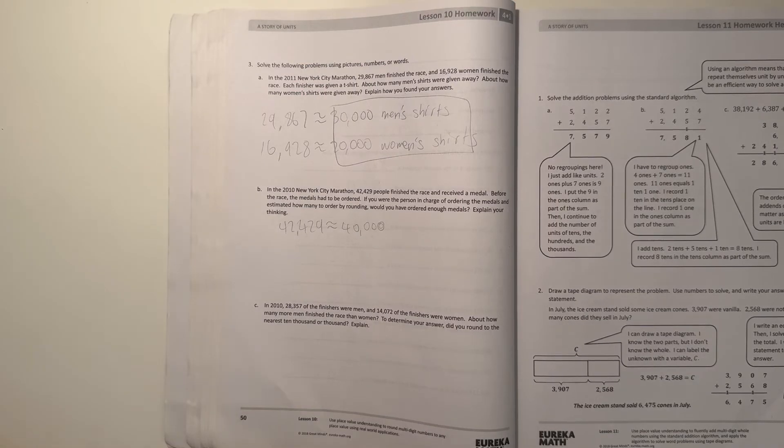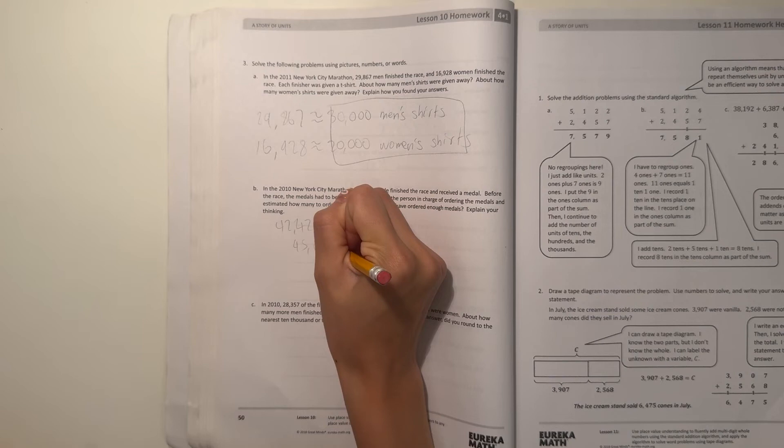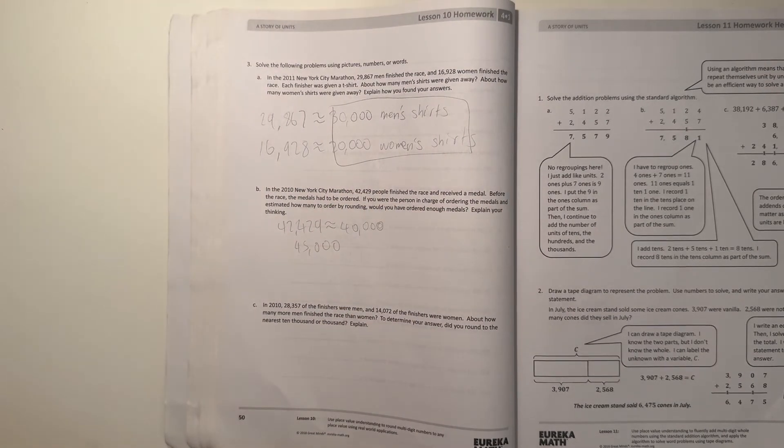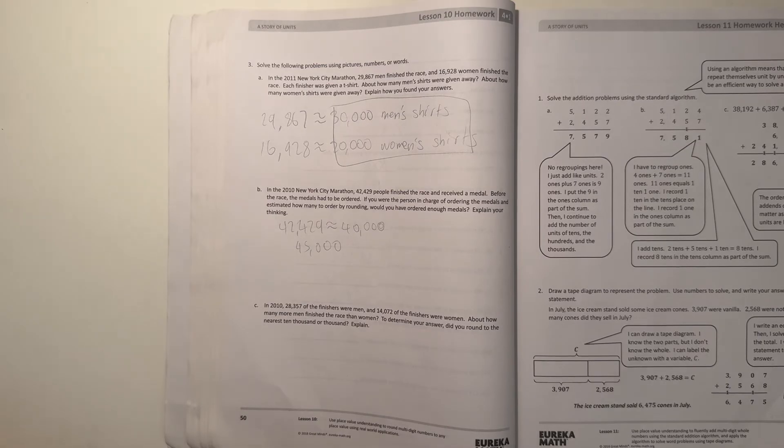So for me I would round up instead of rounding down. So I would round to like 45,000, maybe possibly 50,000, but I think I would round up if I was in charge because I would want to have enough. So 42,429 I would have rounded it up.